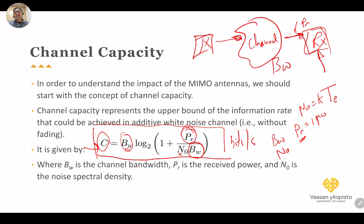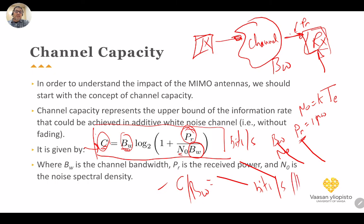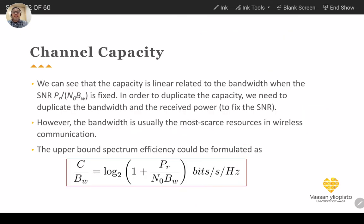If we divide capacity C by bandwidth BW, we get bits per second per hertz — the spectrum efficiency. This gives us the upper bound on spectrum efficiency we can achieve, as shown here.